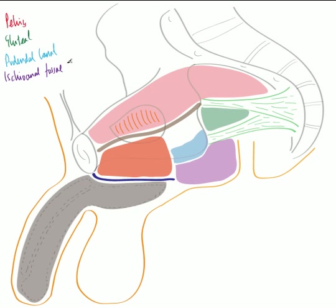The ischioanal fossae are fat pads that sit either side of the rectum and anus. Moving anteriorly, in orange we have the deep perineal pouch, and the deep perineal pouch is separated from the grey superficial perineal pouch by the perineal membrane. Within the superficial perineal pouch I've also added the general orientation of the corpora cavernosa dorsally and the corpus spongiosum more ventrally.